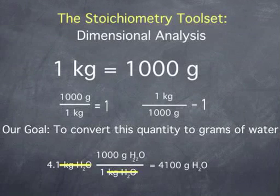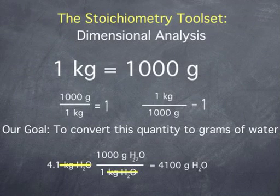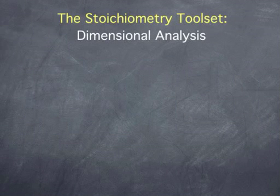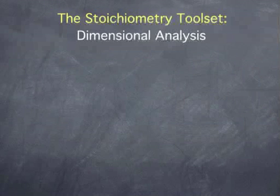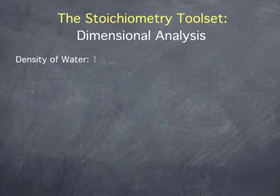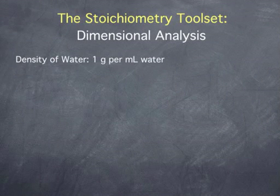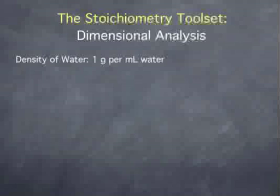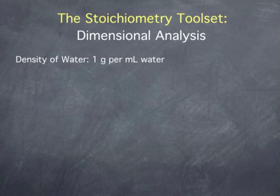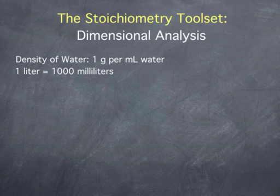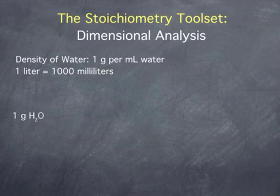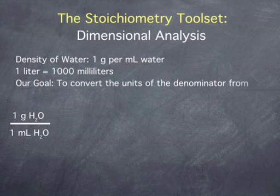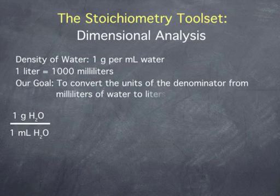So we achieved our goal of converting the quantity 4.1 kilograms of water to that same amount expressed in grams of water. For another unit conversion example, say we are given the density of water as 1 gram of water per milliliter of water, and we want to express this in units of grams of water per liter of water. For this conversion, we will need the definition that 1 liter is equal to 1,000 milliliters. We begin by writing our initial quantity.